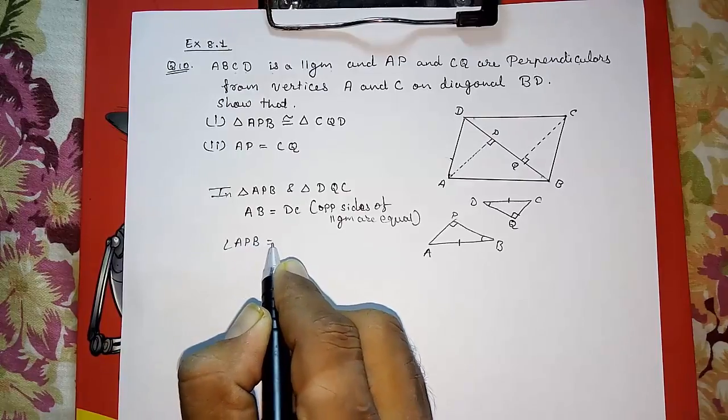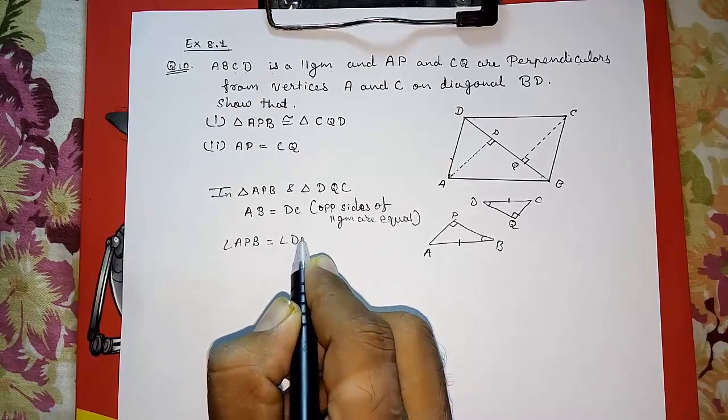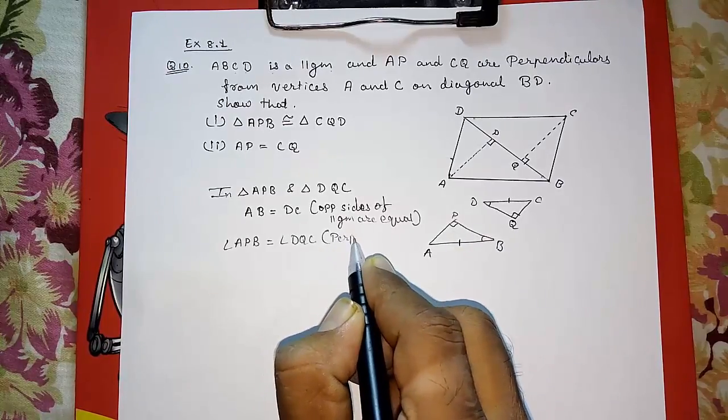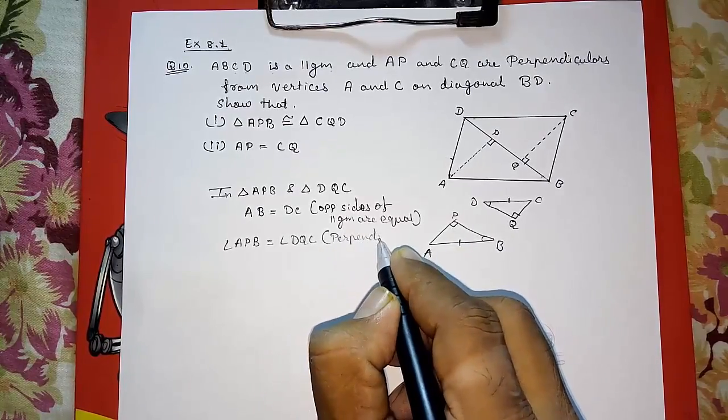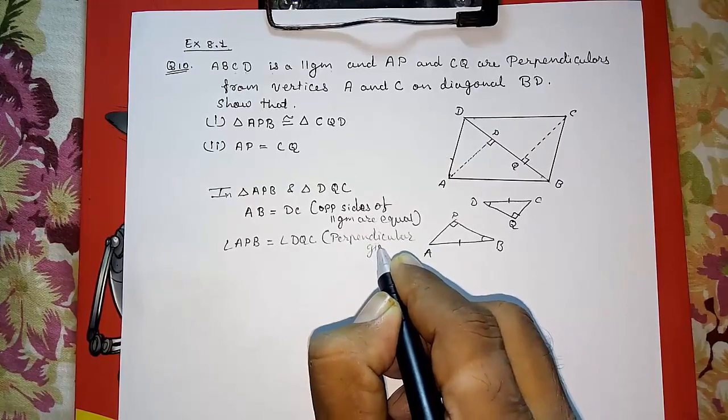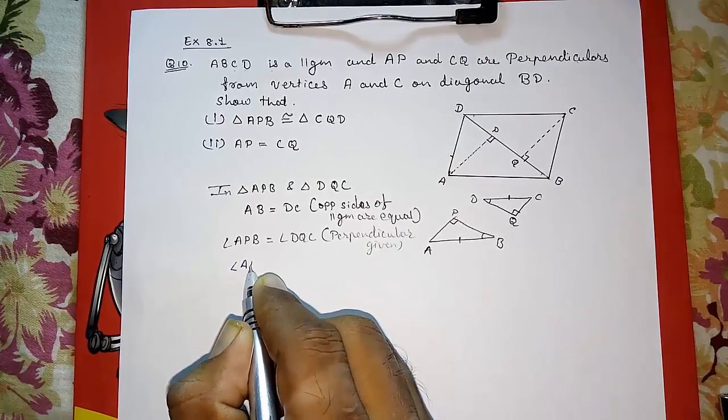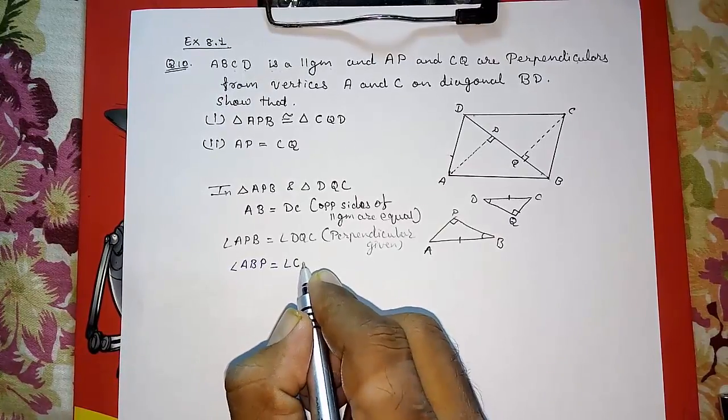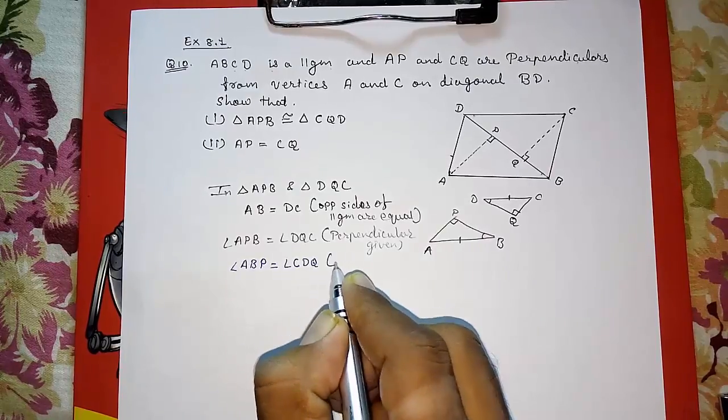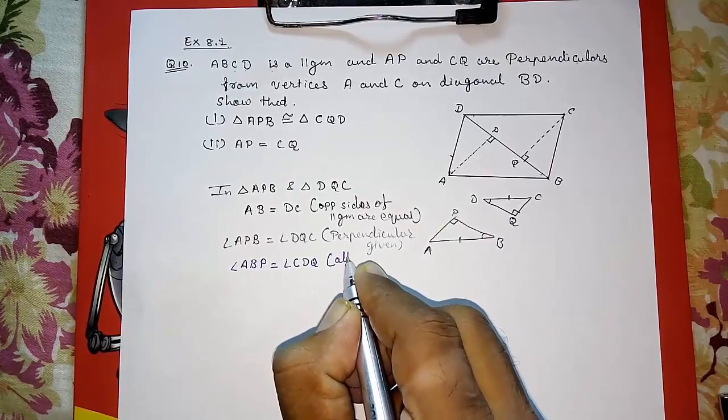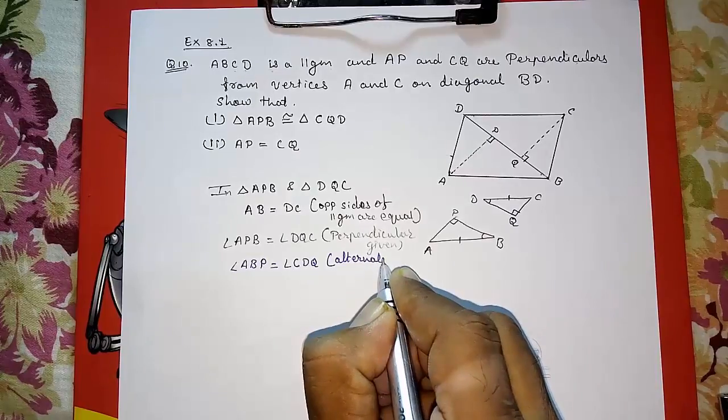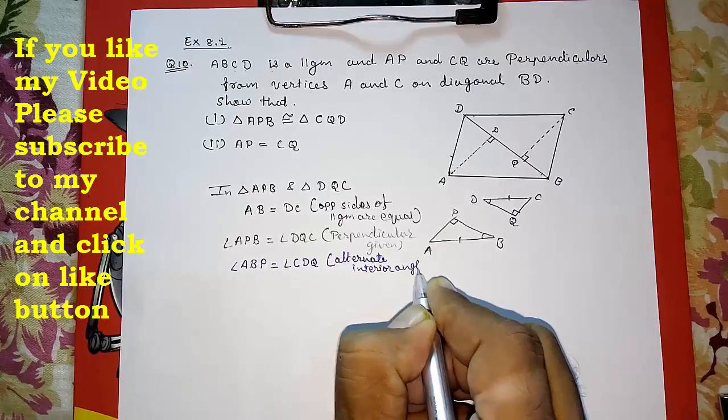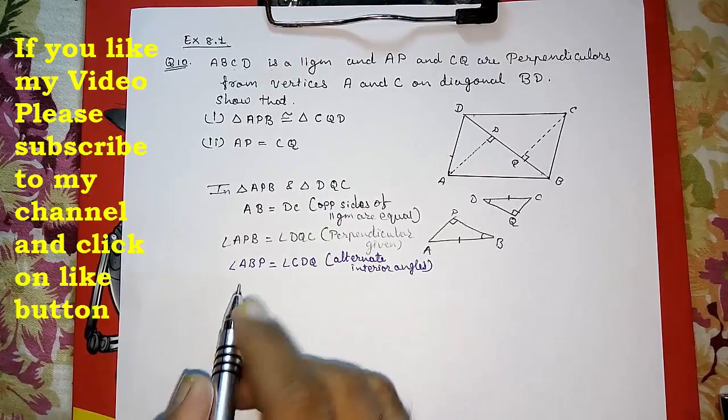Why? Perpendicular given. Angle ABP is equal to angle CDQ. Why? Alternate interior angles. Therefore we got two angles in one side, so we can say...